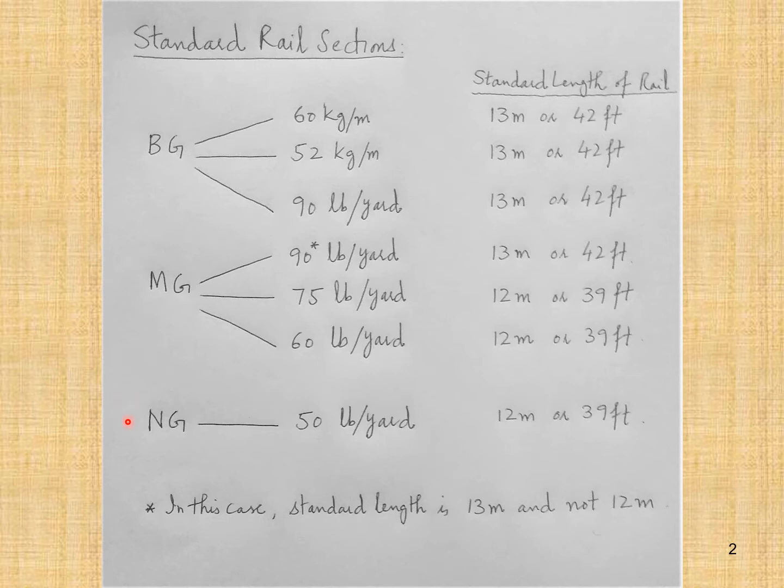As far as narrow gauge is concerned, we have the 50 lb/yard section and the standard length of the rail is 12 meters or 39 feet.